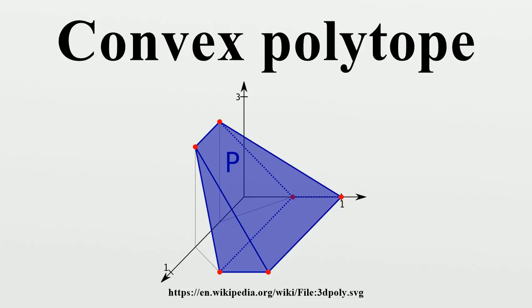In the two-dimensional case the full-dimensional examples are a half-plane, a strip between two parallel lines, an angle shape, a shape defined by a convex polygonal chain with two rays attached to its ends, and a convex polygon.